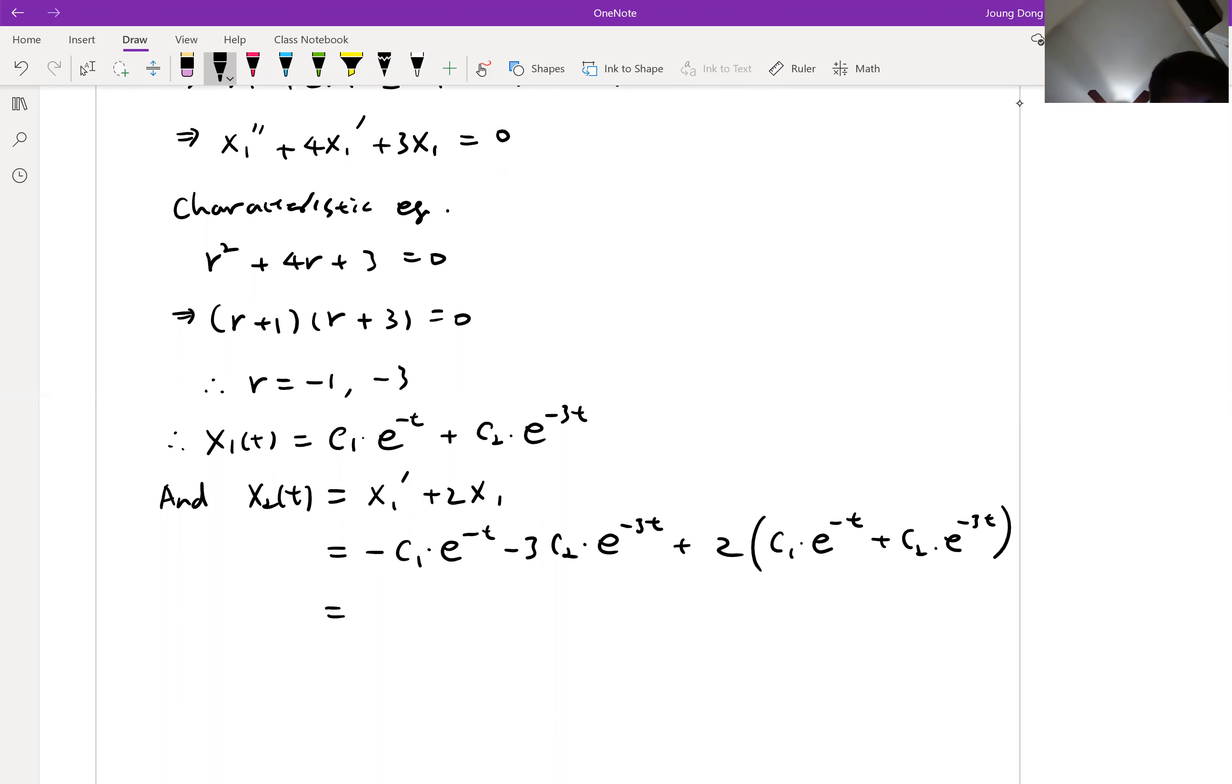It is equal to minus c1 e to the minus t minus 3c2 e to the minus 3t plus 2c1 e to the minus t plus 2c2 e to the minus 3t. And like terms, e to the minus t's and e to the minus 3t's. Which is c1 e to the minus t. Then this guy and this guy, minus 3 and plus 2, which is minus c2 e to the minus 3t.